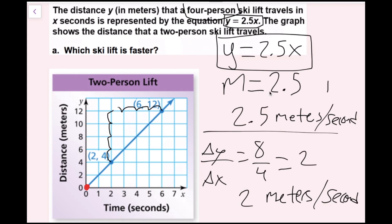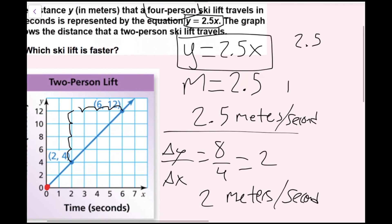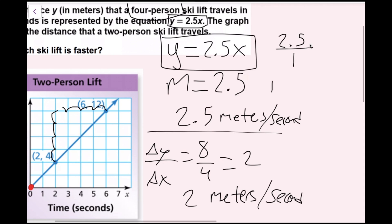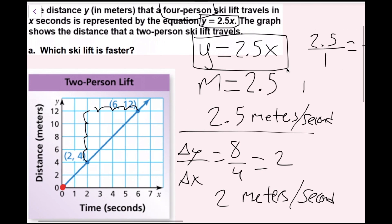I know my slope is 2.5, which means a rise over run of 2.5 over 1. Since in rise over run we want a fraction, I could write 2.5 over 1, or I could use an equivalent fraction: 5 over 2. So my change in y over change in x is 5 over 2, which is the same as my rise over run — I go up 5 and right 2.